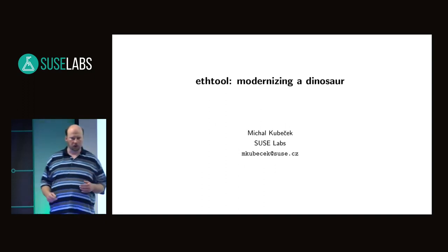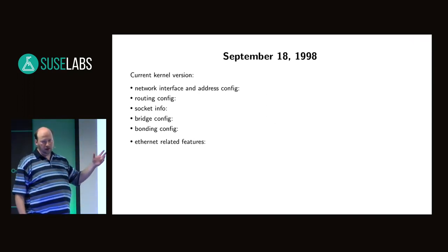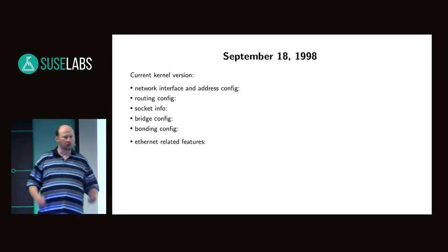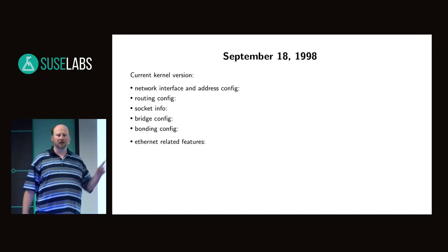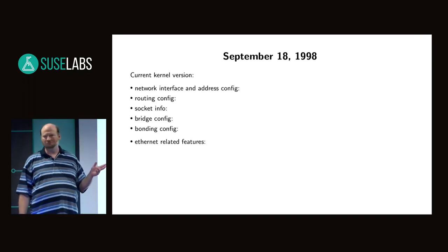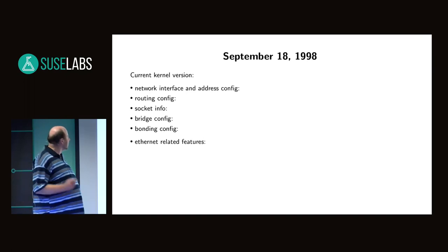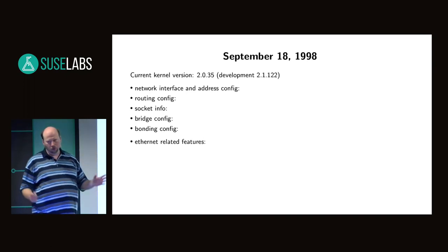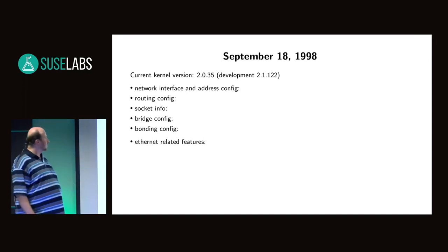Let's start with a short historic quiz. Assume we moved 20 years back to September 1998. No containers, no systemd. All people worry about is Y2K. So what's the current kernel version? 2.0.35, or 2.1.122, which means 2.2 is really close but not there yet — not for a few months.